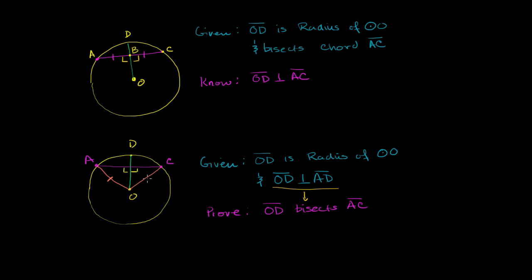The radius doesn't change on a circle, so those two lengths are equal. Let me label the intersection point M, because we're hoping it ends up being the midpoint of AC. Triangle AMO is a right triangle with hypotenuse AO, and triangle OMC is a right triangle with hypotenuse OC. We've already shown the hypotenuses have the same length.